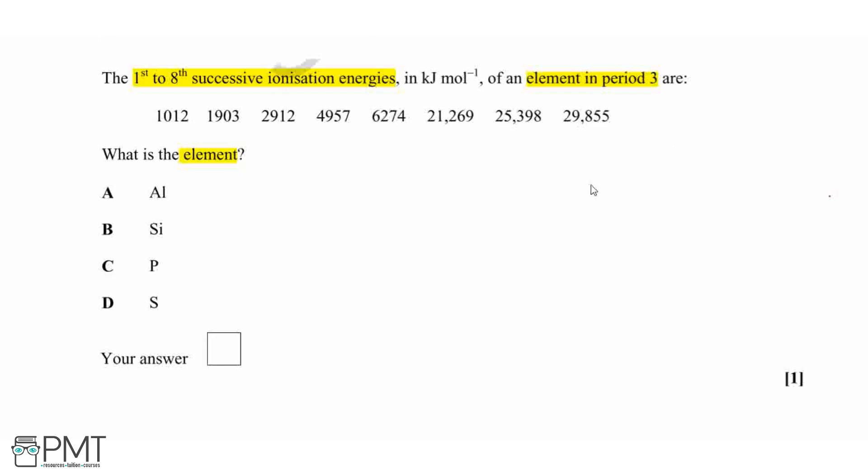We've been given these values for our ionization energies. Recalling that ionization energies are the energy required to remove an electron from our species, we've got the first to the eighth here. So these, going from left to right, are going to be the energy required to remove the first, the second, the third, the fourth electron, and so on and so forth from our element.